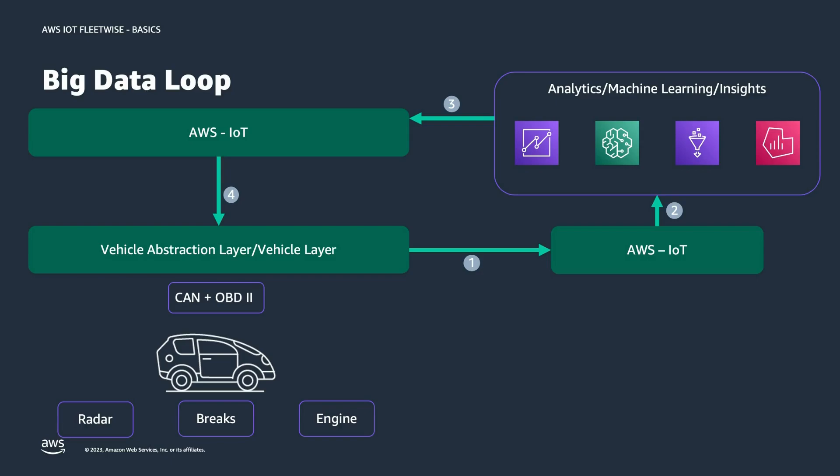We send those data sets over to AWS IoT, which then forwards them to downstream applications. In this case we're interested in analytics, machine learning, and insights. Example services shown here include QuickSight, SageMaker, Glue for the ETL pipeline, and Grafana — just a few examples. Those applications may reveal that you don't have the right data or enough data. That's when you change the collection process: you send a command to AWS IoT, which sends it back to the vehicle abstraction layer to collect different data sets. This is what FleetWise makes simple for you.